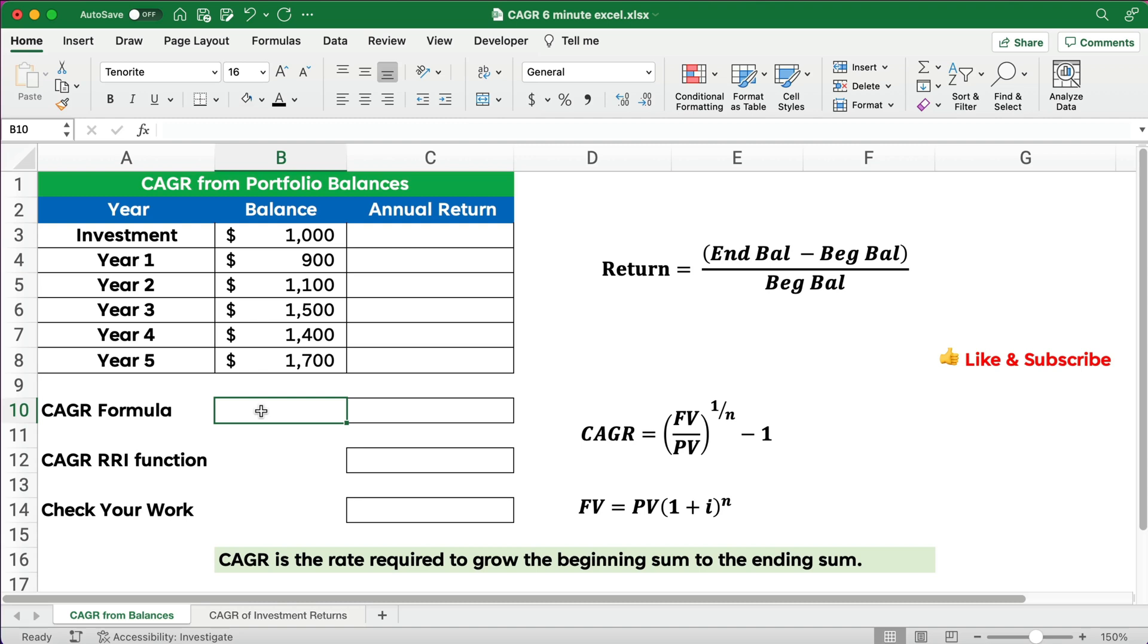Hello. Today we're working on how to calculate CAGR or compounded annual growth rate if we're given portfolio balances, or in the next problem if we're given investment returns. So let's get started. So let's calculate the annual return for each year and then we'll annualize it with the compounded annual growth rate formula.